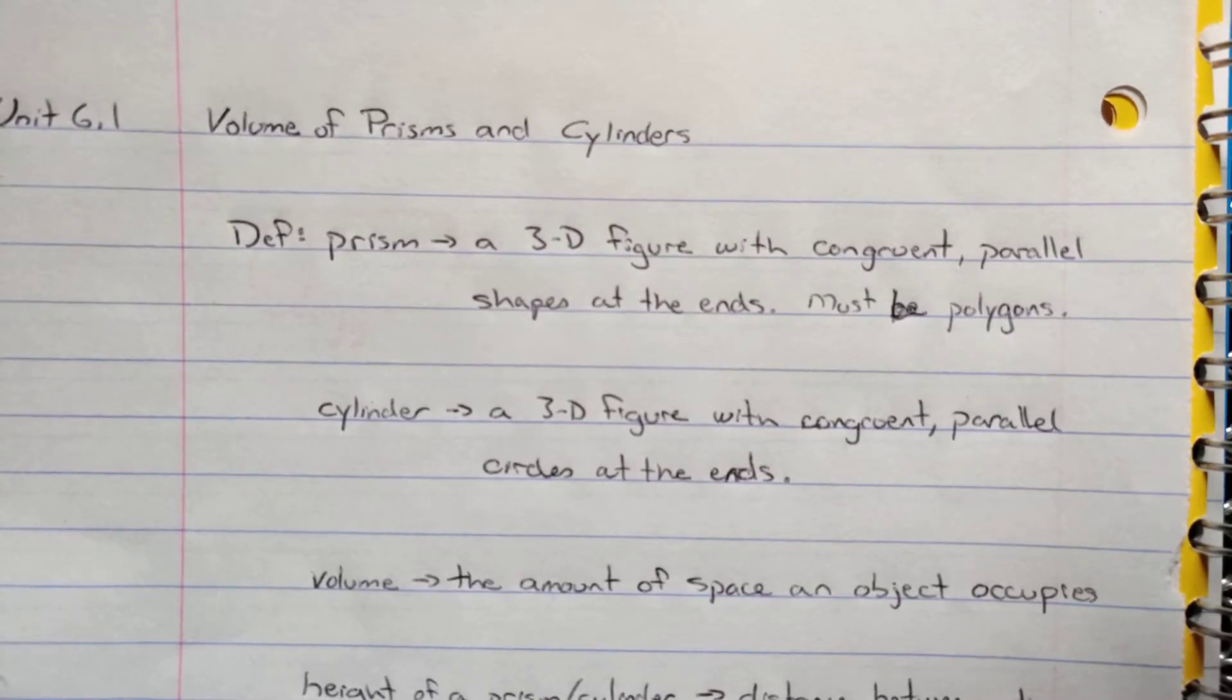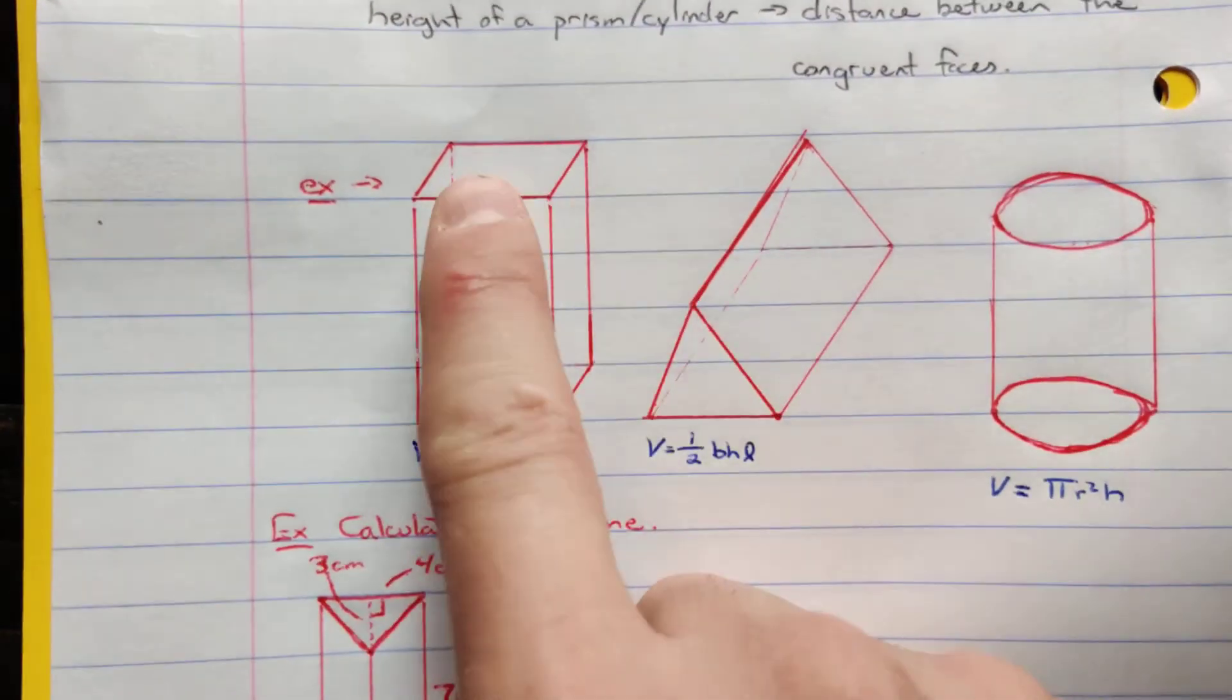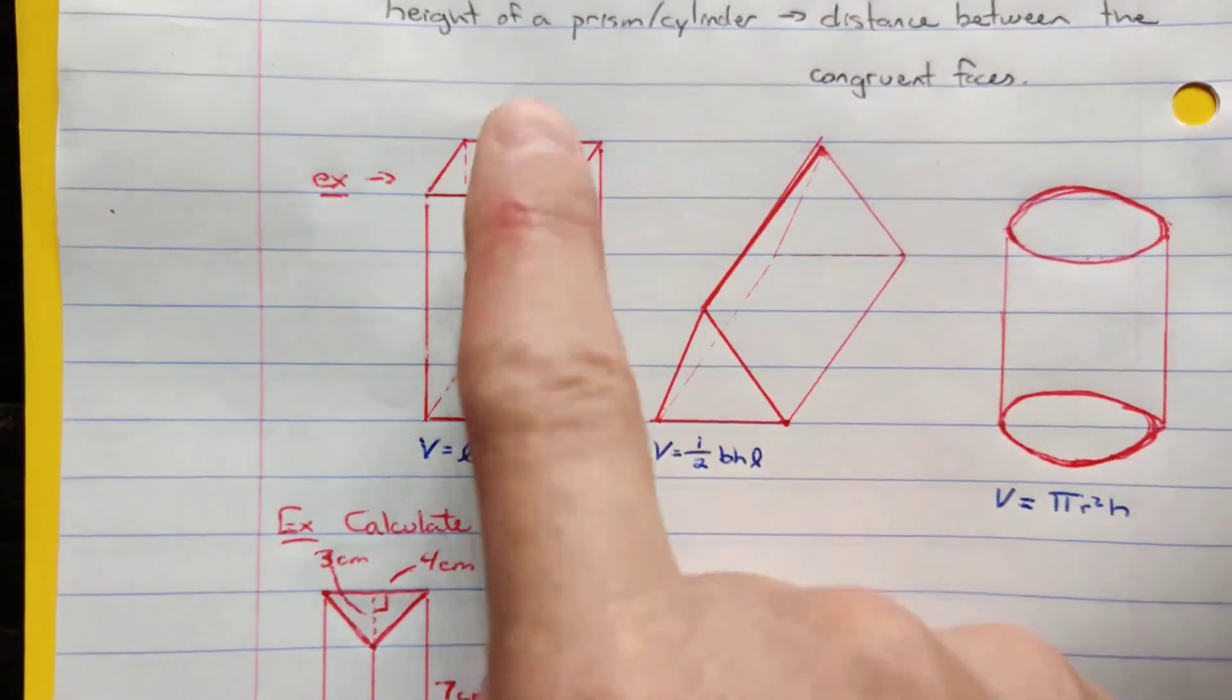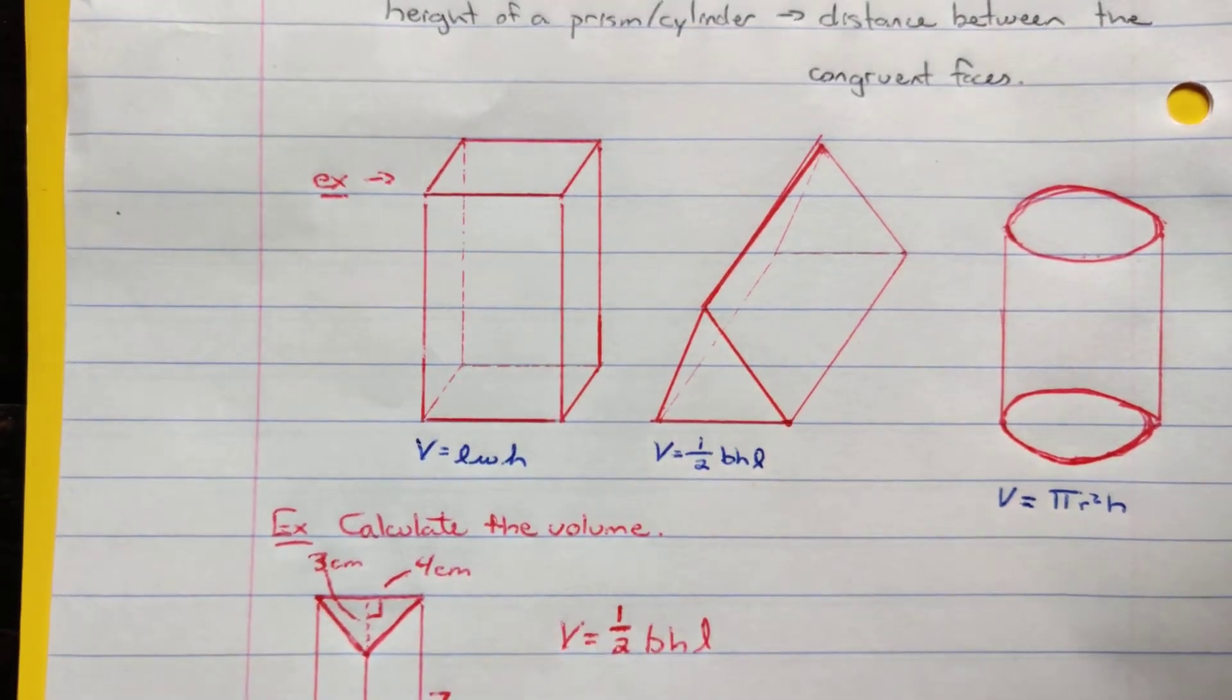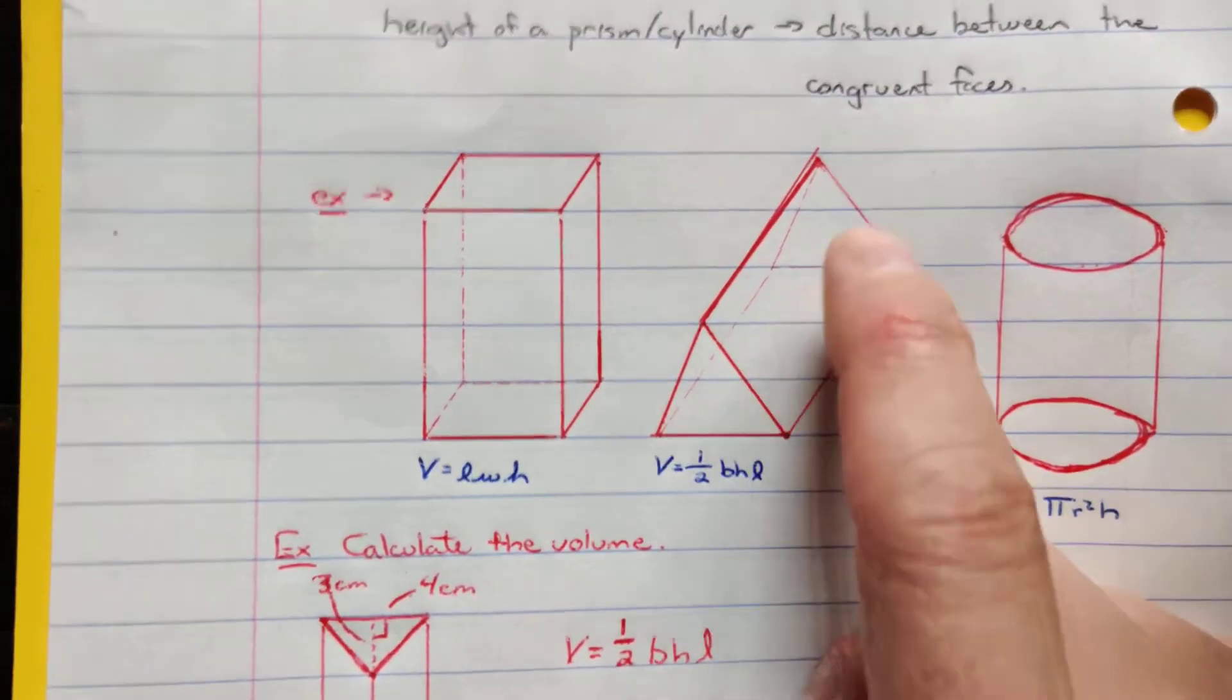Polygons are enclosed figures that all have straight sides, or nice clean sides that are straight. So a square is a polygon. They're parallel. That is an example of a prism.